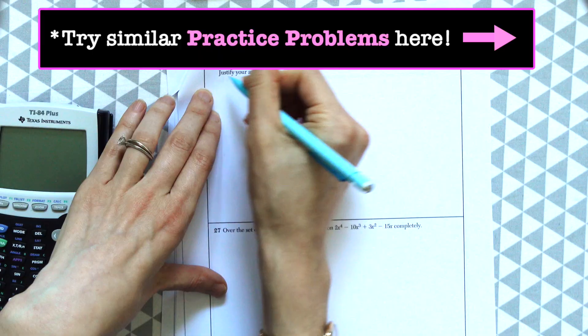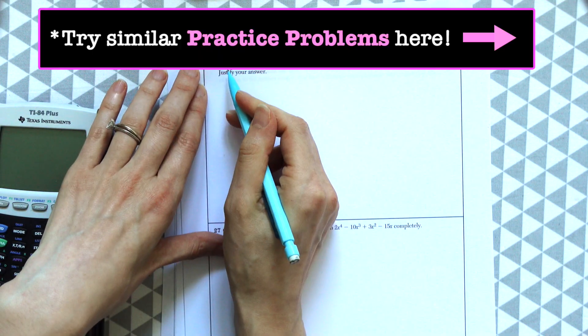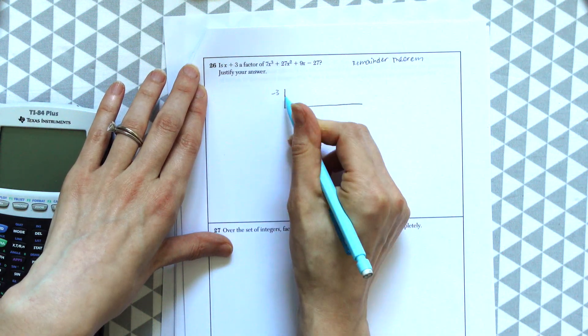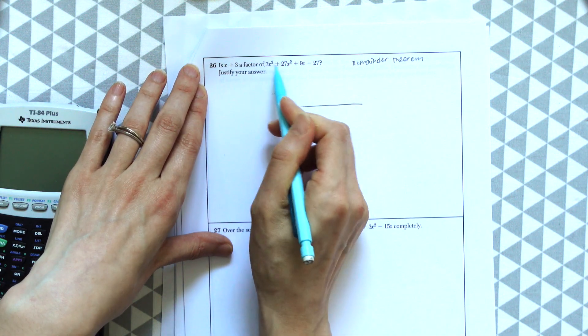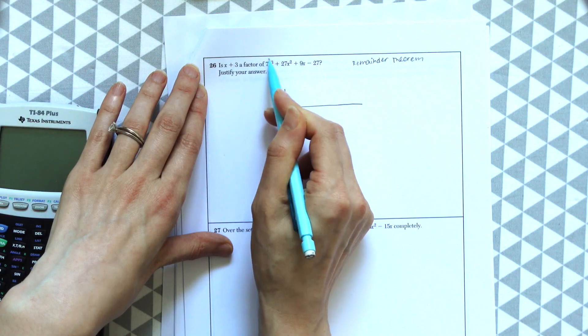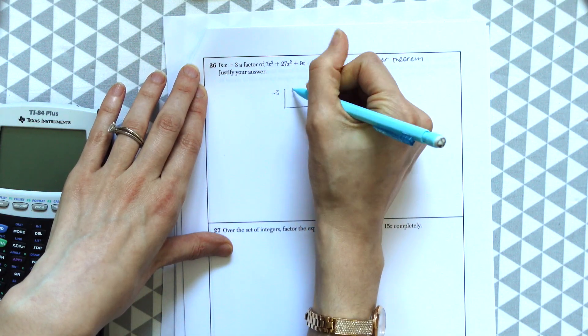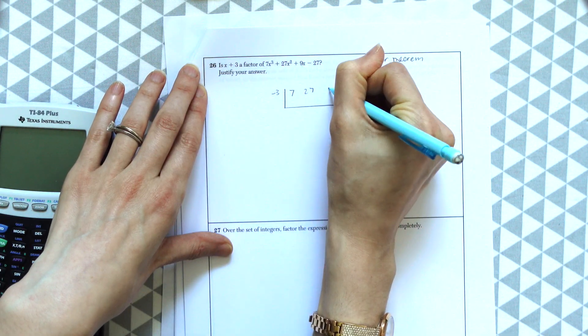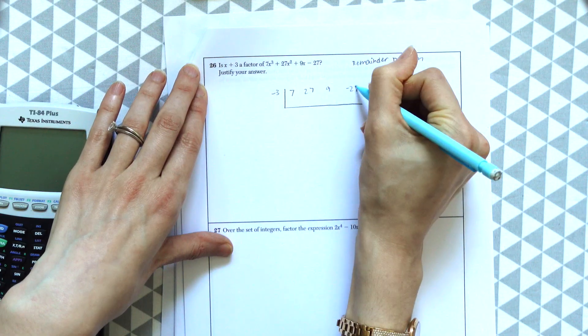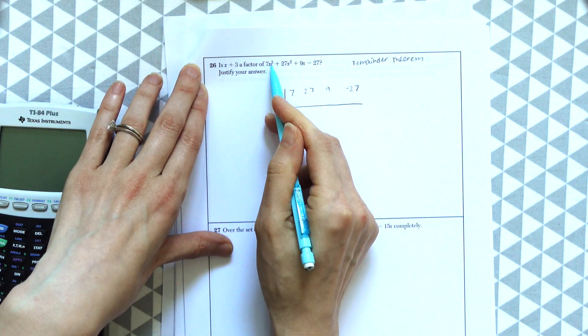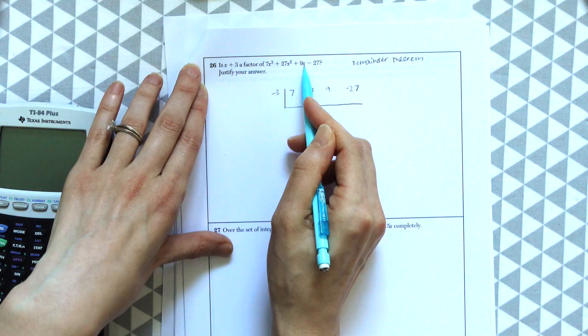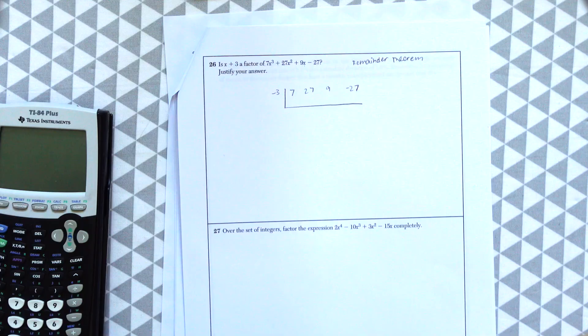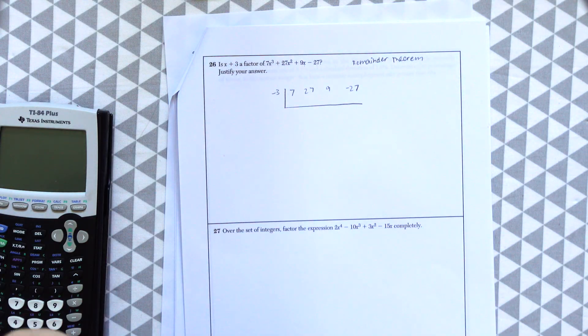So to do synthetic division, this is x plus 3, so we're going to take minus 3 and set up our little box here. And then we're going to take the coefficient of everything of this equation within this box. So we have a 7, a 27, a 9, and a negative 27. Make sure they're in order of power: x cubed, x squared, and x. Okay, so we're in good shape.